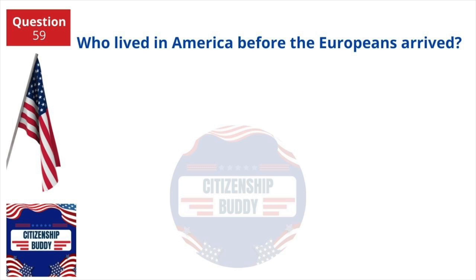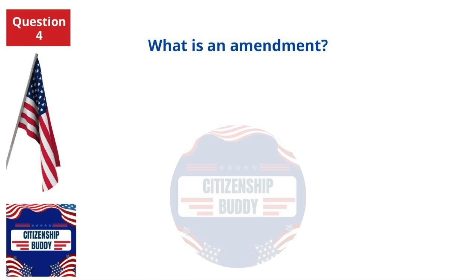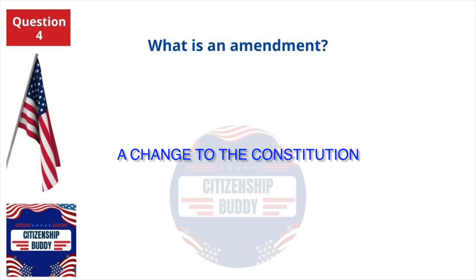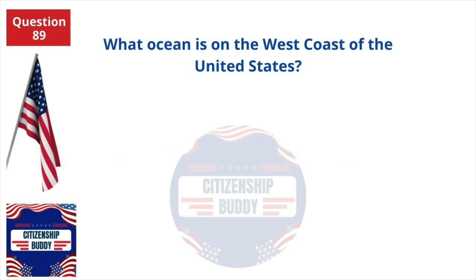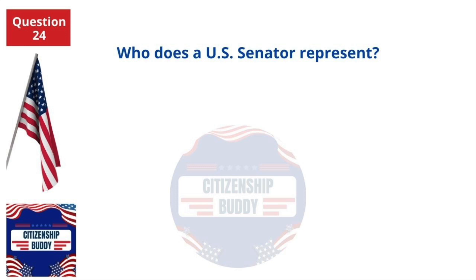Who lived in America before the Europeans arrived? American Indians. What is an amendment? A change to the Constitution. What ocean is on the west coast of the United States? Pacific Ocean. Who does a U.S. Senator represent? All people of the state.